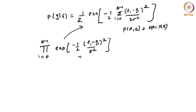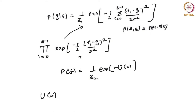The prior probability P(F) is modeled by another exponential distribution: 1/Z2 times exponential of minus U(ω). U(ω) is often referred to as a clique potential. If we write it in terms of individual pixel values, P(G|F) is a normalizing constant times exponential of the sum over all pixels.